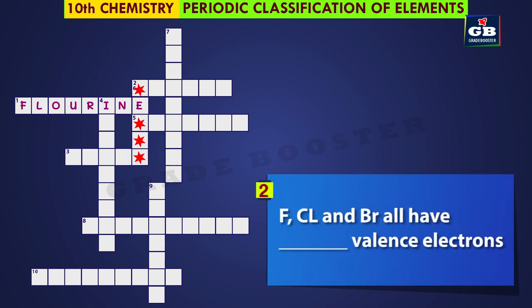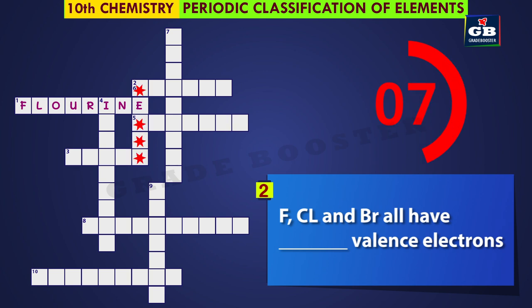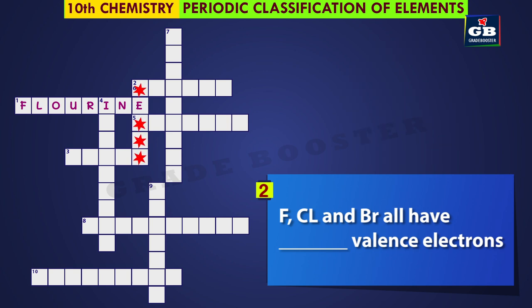Two down: Fluorine, Chlorine and Bromine all have dash valence electrons. Do you know how many valence electrons they have? The answer is 7. Fluorine, Chlorine and Bromine all have 7 valence electrons.